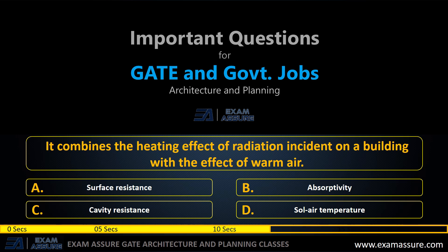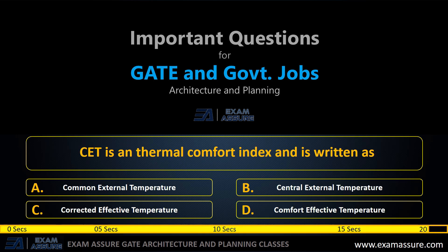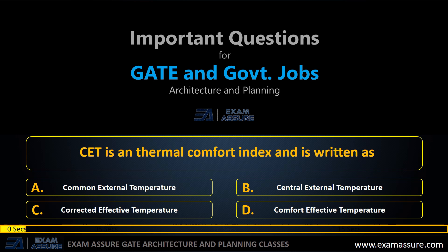Next question: It combines the heating effect of radiation incident on a building with the effect of warm air — option A: surface resistance, option B: observatory, option C: cavity resistance, option D: sol-air temperature. The options also include: external temperature, central external temperature, corrected effective temperature, comfort effective temperature. The correct answer is corrected effective temperature.